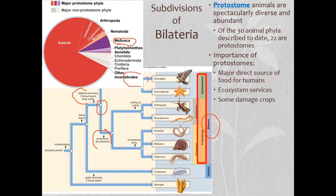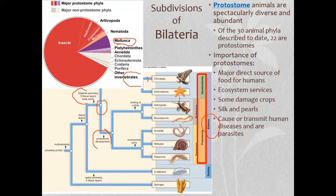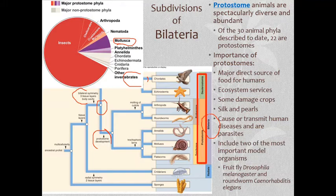Not all protostomes are fantastic for humans. Some species can be harmful to our crops, some generate luxury items such as silk and pearls, and some can cause or transmit human diseases as parasites. We can also learn a lot about animals in general from certain protostome species. In this talk, we're going to discuss some model organisms and how, as a biologist, you can apply information from these organisms to many others within Kingdom Animalia.